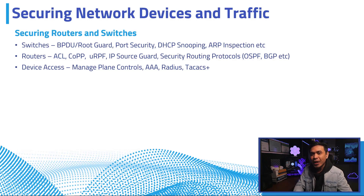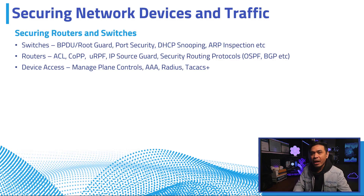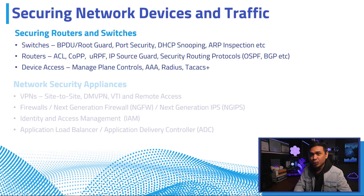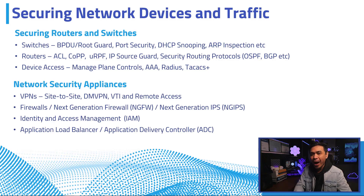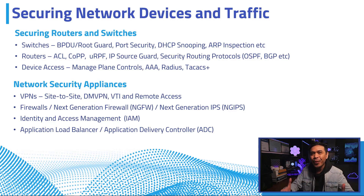For both routers and switches, you can enable device access security — this is where you administer your network devices. You can activate security via management plane controls and also enable AAA features. AAA stands for Authentication, Authorization, and Accounting. AAA features include RADIUS and TACACS+. At least in Cisco routers, the most advanced VPN features and capabilities run in routers — not firewalls — such as FlexVPN, DMVPN, VTIs, remote access, and many more. Understanding VPNs is another way to slowly shift from a network engineer to a network security practitioner.